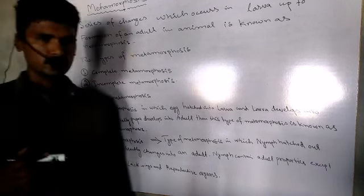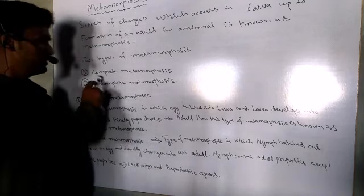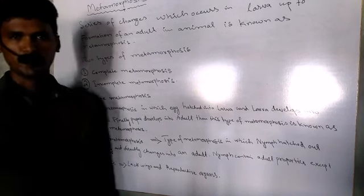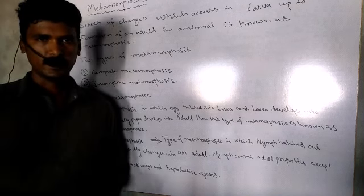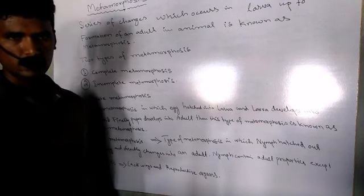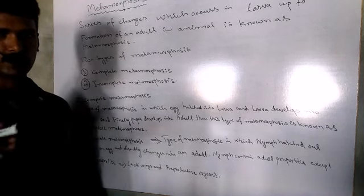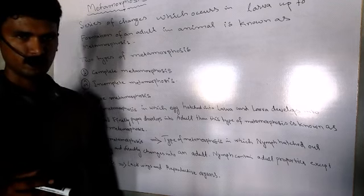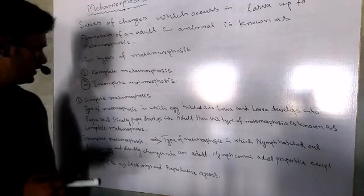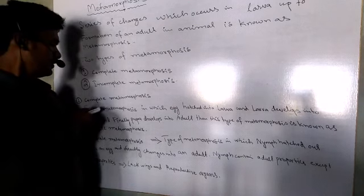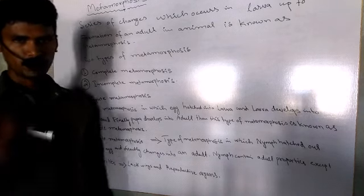There are two types of Metamorphosis: Complete Metamorphosis and Incomplete Metamorphosis. In complete Metamorphosis, egg hatches into larvae and then larvae changes into pupae. Then pupae becomes an adult. So this is a series of changes which occurs during Metamorphosis. This type of Metamorphosis is known as complete Metamorphosis.